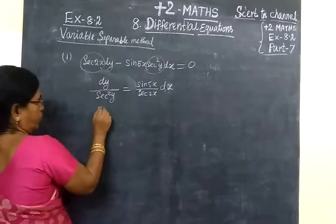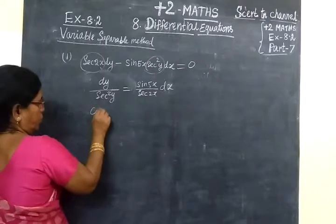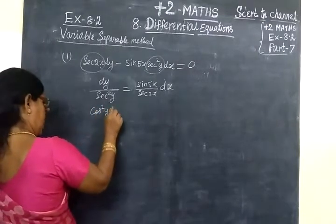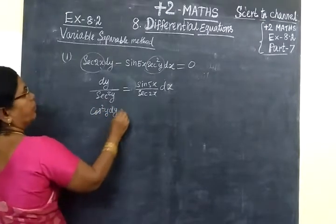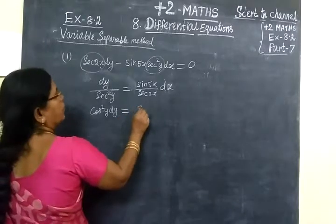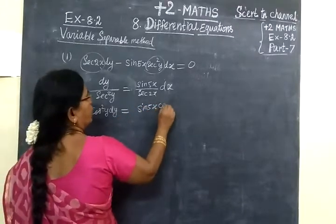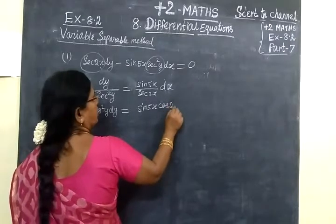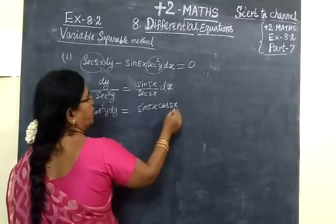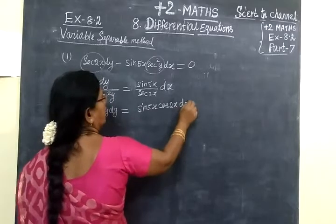Now, secant square y numerator to the denominator, cos square y. Cos square y, dy equal to sin 5s. Secant numerator to the denominator, cos i. So one side. So one base we can take cos 6. Isn't it? dx.